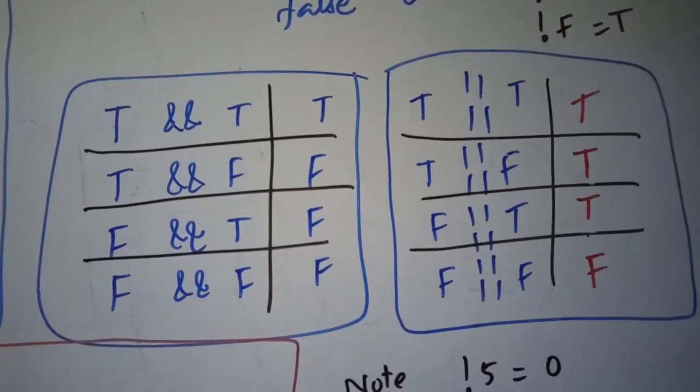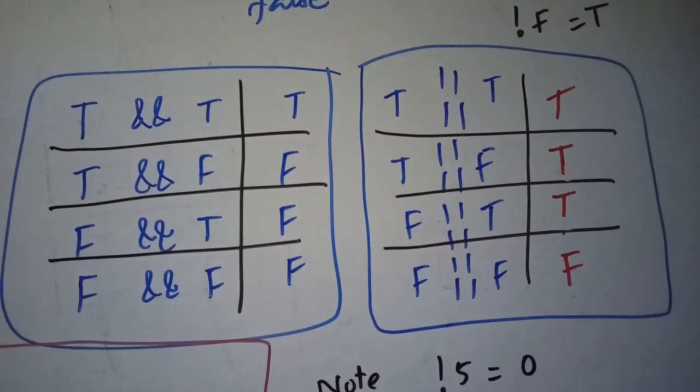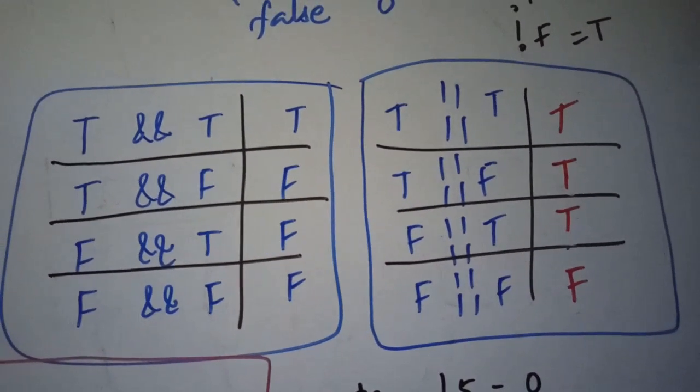How and works, if both the conditions are true then the resultant is true in case of and. In case of or, if any one is true then the resultant is true.